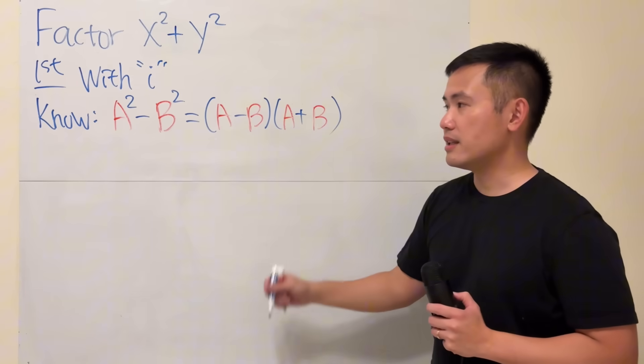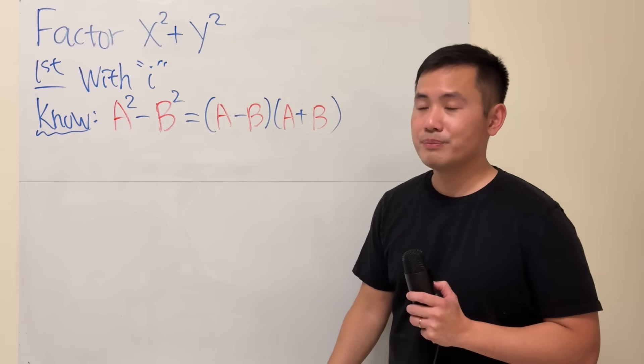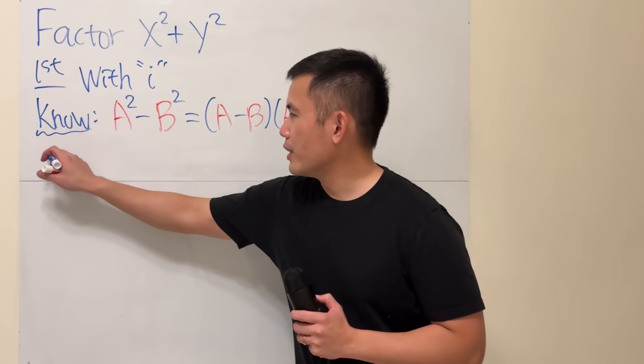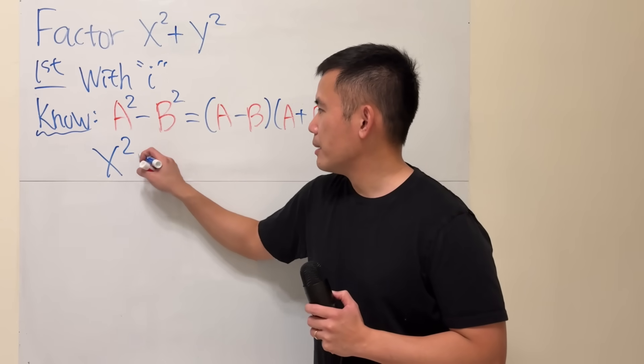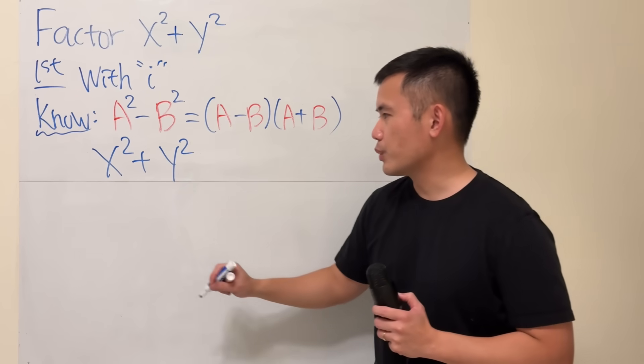And we're going to utilize this idea. So how can we do it? This is the sum of two squares. Well, check this out. x squared is right here, plus y squared. I really want to have a minus in between, so we can do the following.